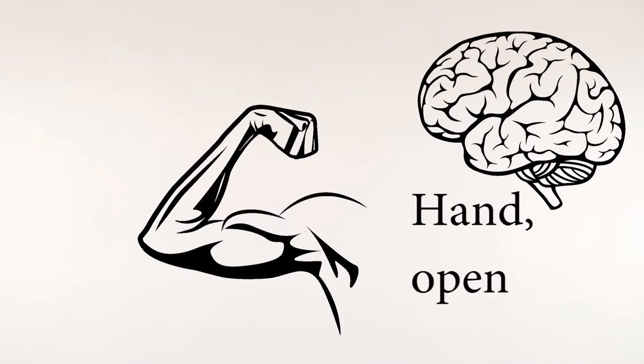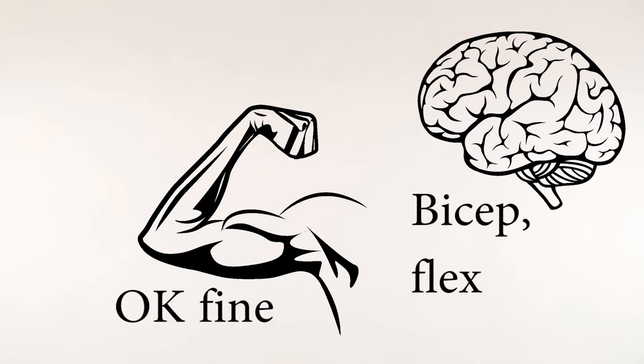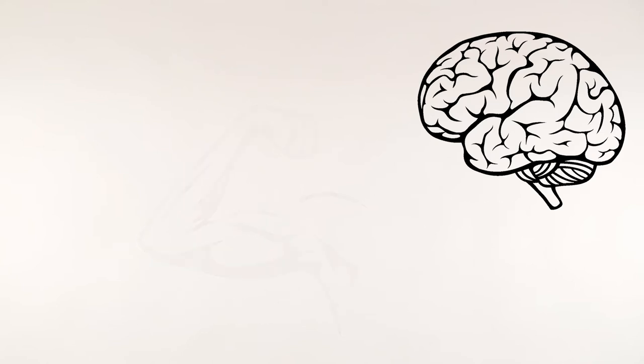First, the brain can no longer tell the hand what to do. It can still talk to the muscles and tell them to contract. They're just no longer attached to anything. However, we can use these contracting muscles as our window into the brain.